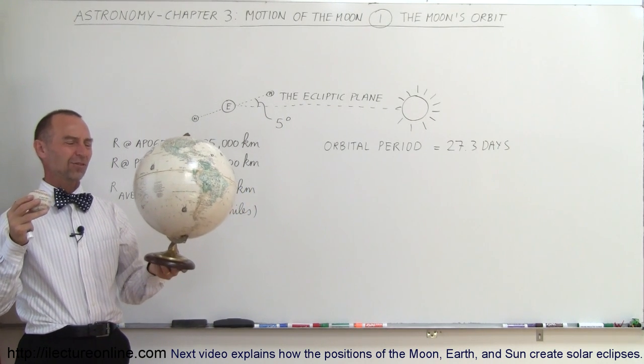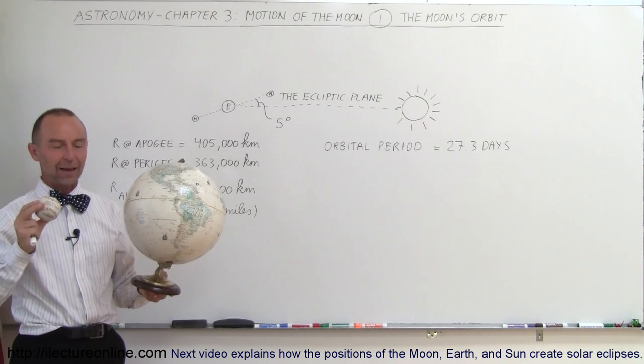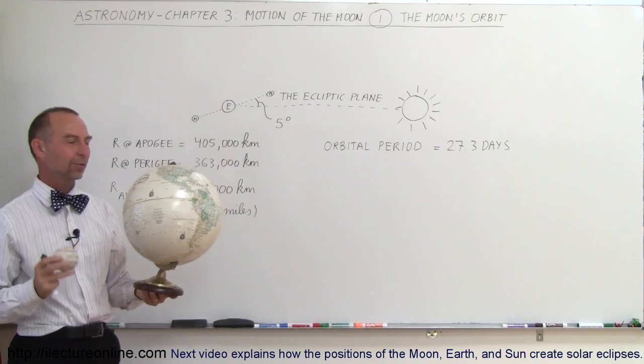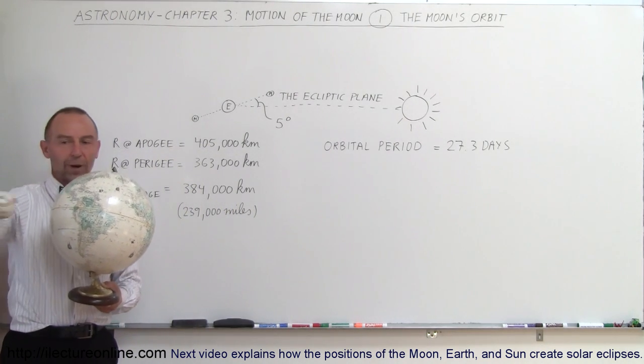Now, of course, the relationship size-wise is not quite right. The diameter of the Earth is about 3.5 times the diameter of the Moon, so this isn't quite exactly the relationship. But as the Earth goes around the Sun, the Moon goes around the Earth.